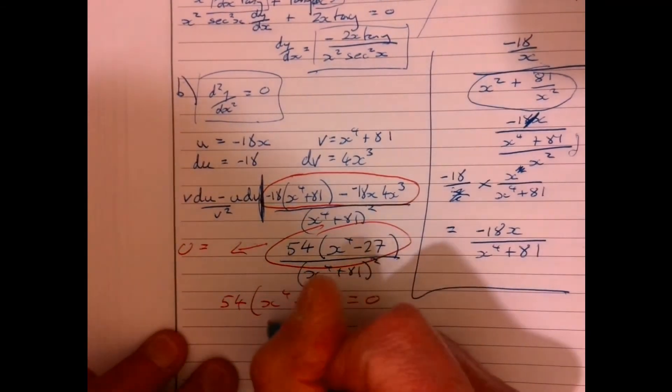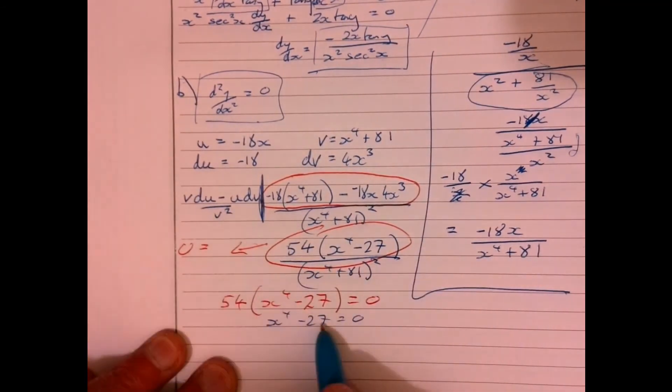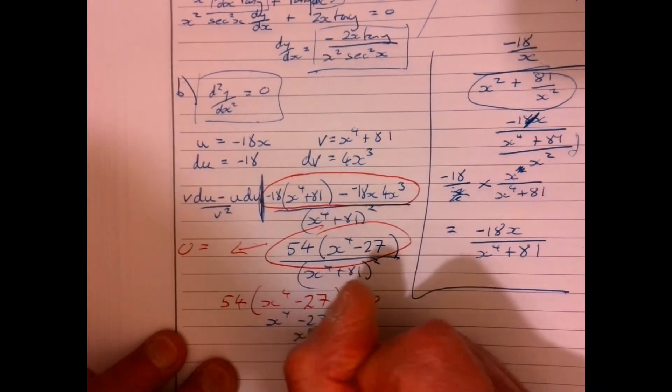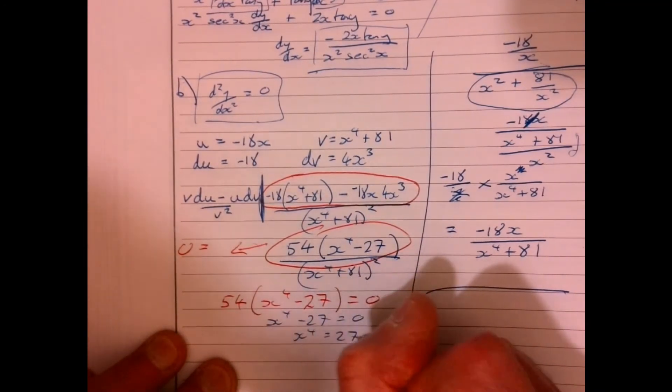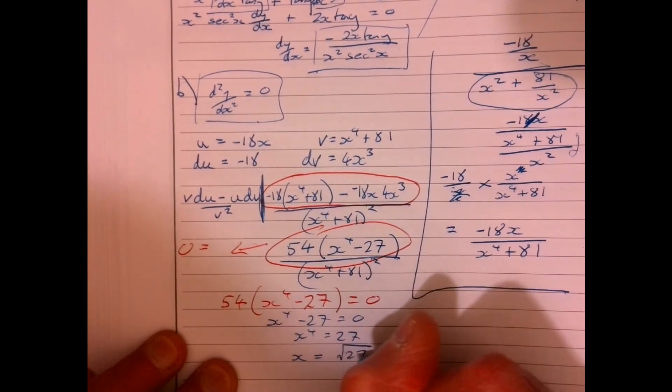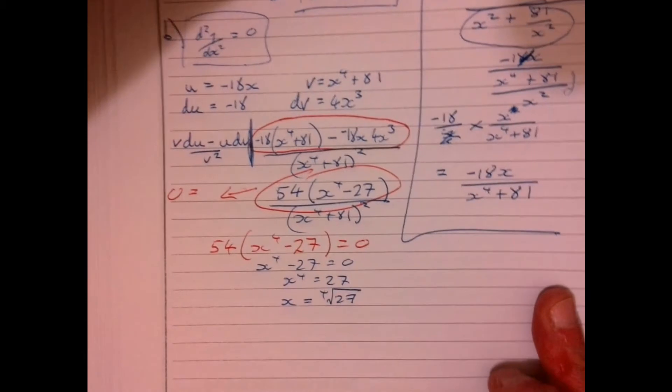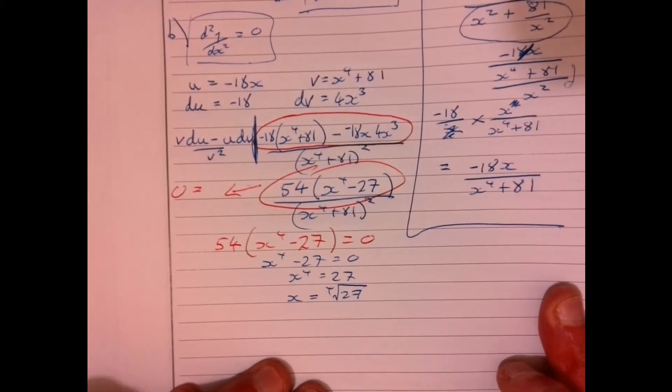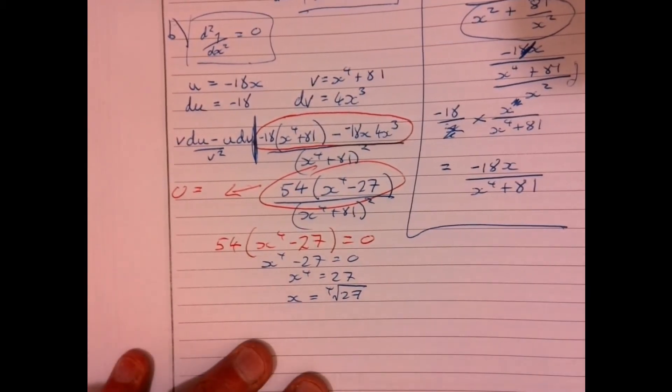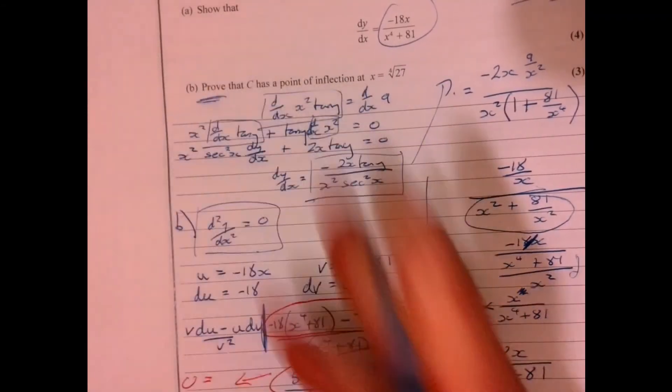We can divide both sides by 54. There we go. Now, if I add 27 to both sides, take the fourth root, so x equals the fourth root of 27. Now, I need to be a little bit careful because a lot of people stop there, right, and they think that's all they've actually got to do. The question said prove.